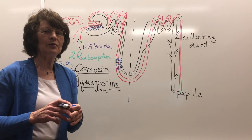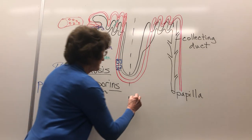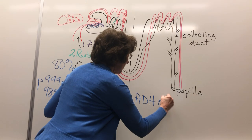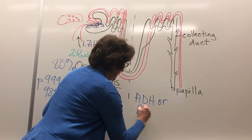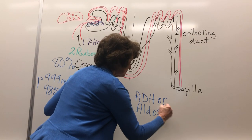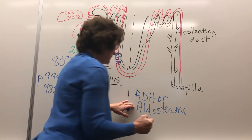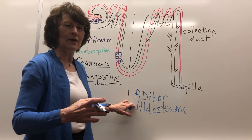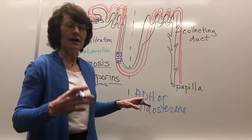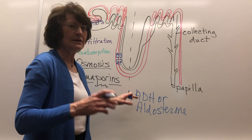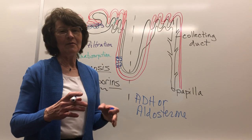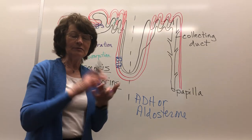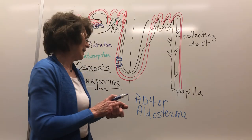This side of the nephron is permeable to water. The other side — the ascending limb and collecting duct — is impermeable to water unless acted on by ADH, or aldosterone. ADH stands for antidiuretic hormone, and antidiuretic hormone means it's going to reduce the amount of urine going out.